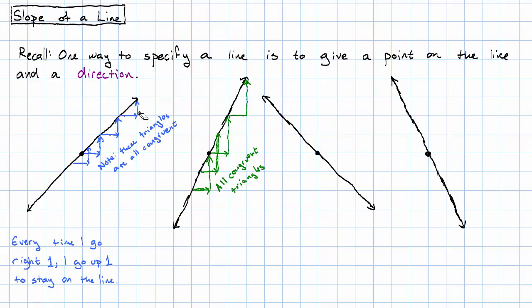How do I know that all of the triangles are congruent? Because I could pick one of them up and translate it on top of the next one.